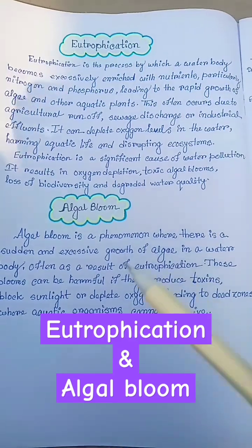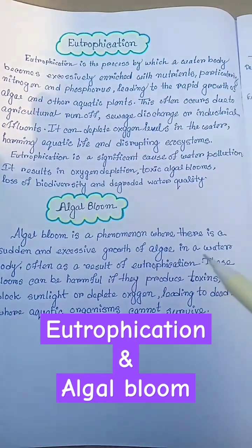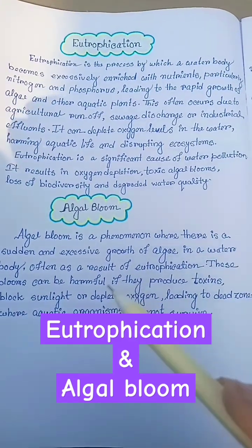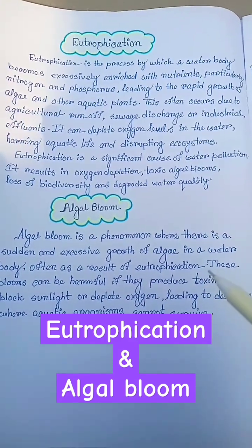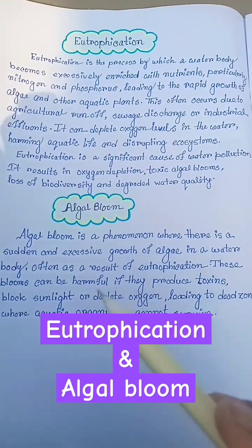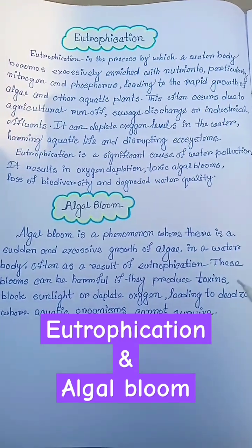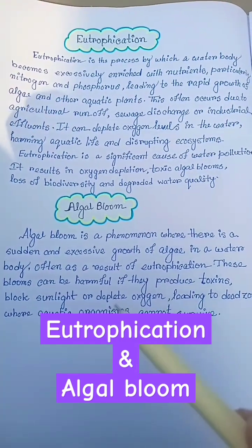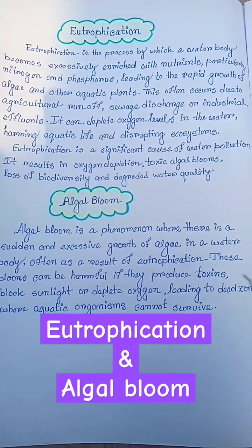Next, algal bloom. Algal bloom is a phenomenon where there is a sudden and excessive growth of algae in a water body, often as a result of eutrophication. These blooms can be harmful if they produce toxins.